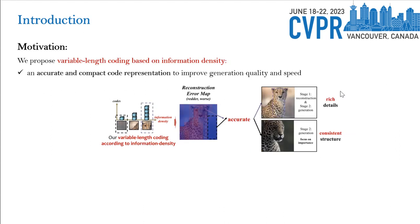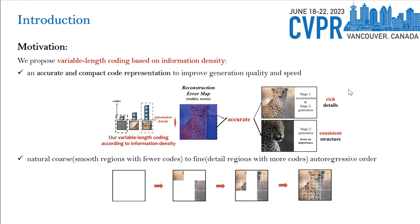To address this problem, in this paper we propose information density-based variable-length coding for an accurate and compact code representation to improve generation quality and speed. Moreover, we further propose a naturally-ordered autoregressive model for more effective generation.